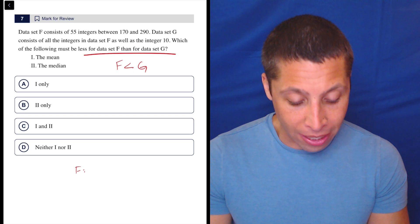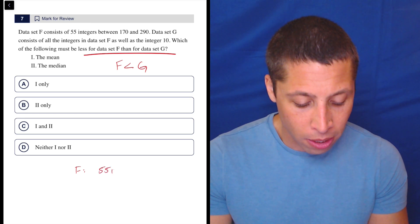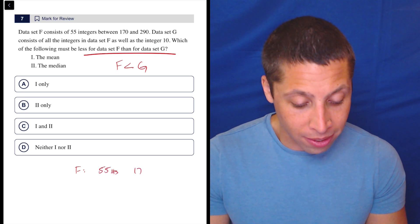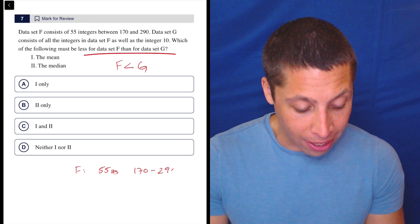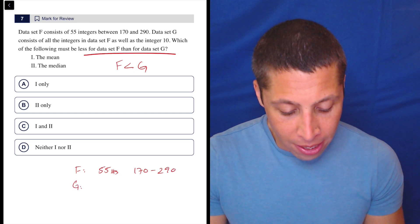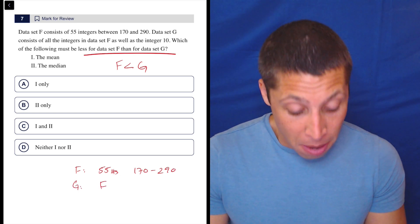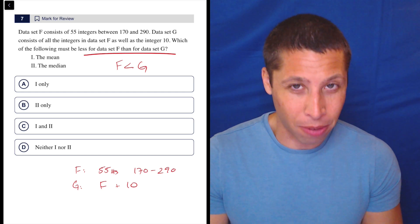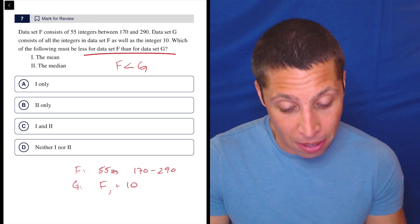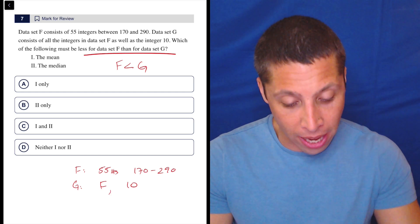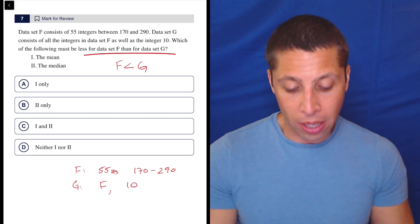So F is a set that's 55 numbers from 170 to 290. G is F plus the number 10. I don't even know if plus is the right way to think about it. Maybe I just put like a comma instead because we're adding that number 10. So let's think about the two things, the mean.